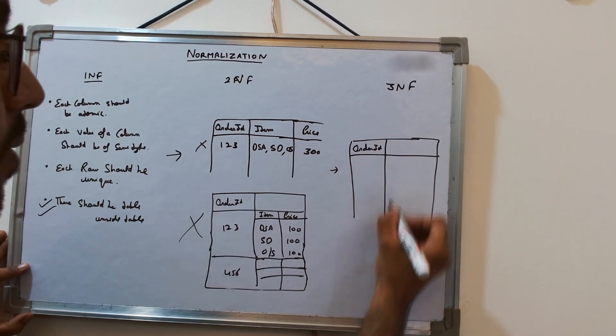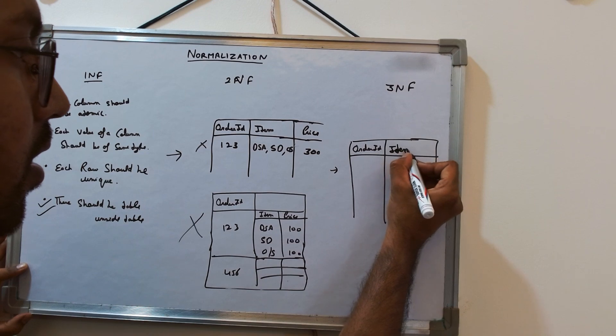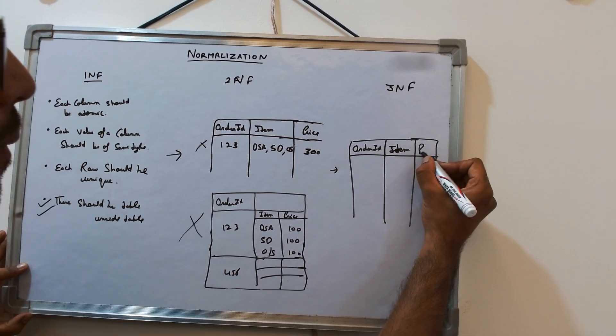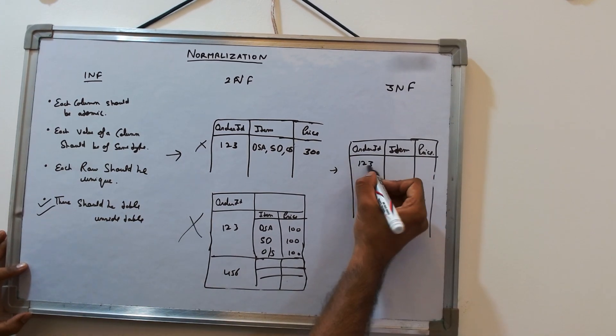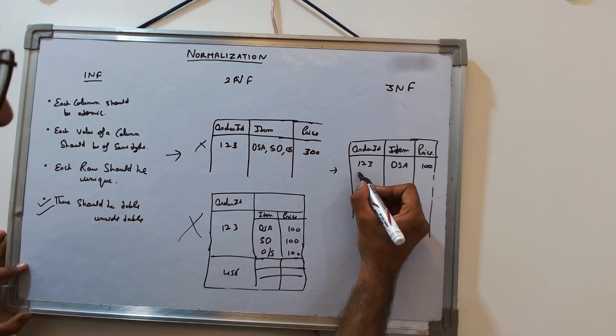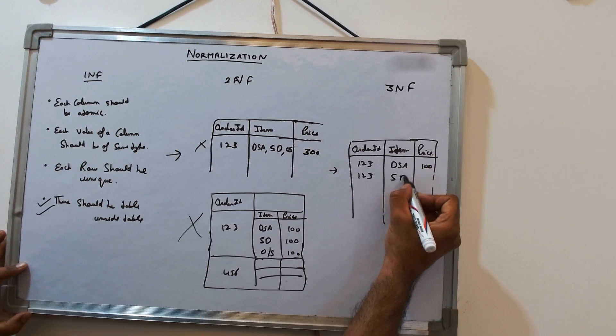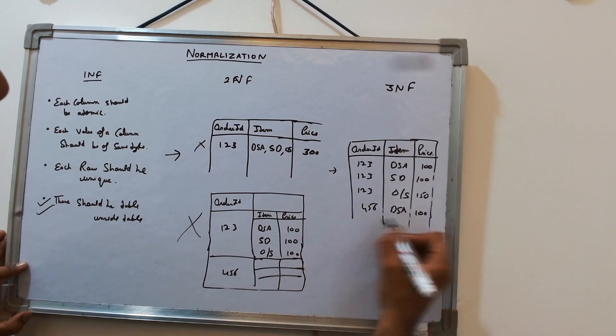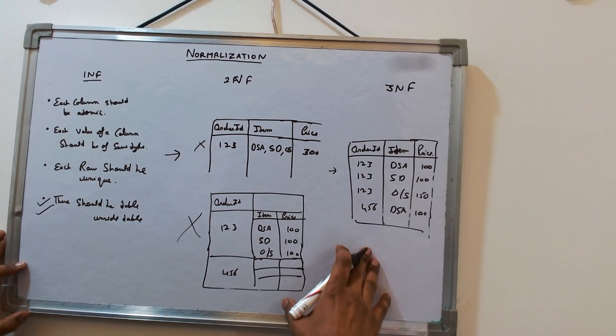We can easily do this. Order ID, item, price. 1-2-3 DSA 100, 1-2-3 System Design 100. Like this. So now here if you see, this justifies all the four points of 1NF.